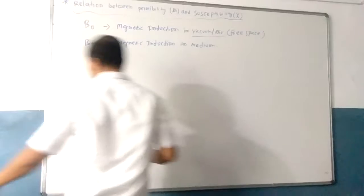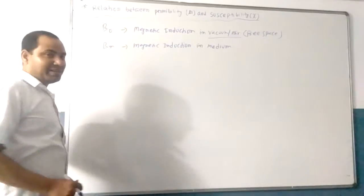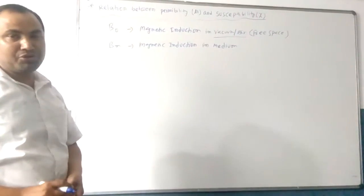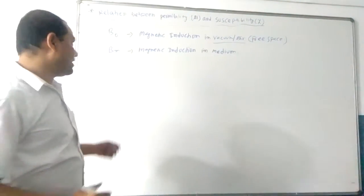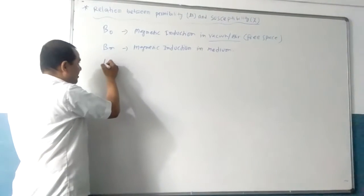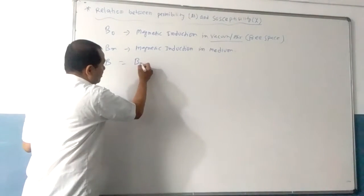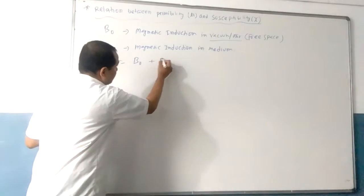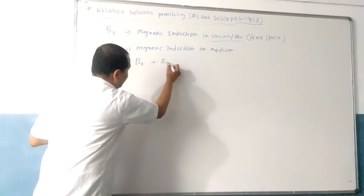If a magnetic material is introduced, then the net magnetic field B is equal to B0 plus Bm.